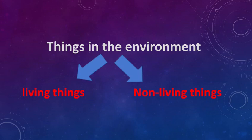Non-living things, they do not grow. Things in the environment can be divided into two groups: living things and non-living things. Living things, they grow. Non-living things, they do not grow.